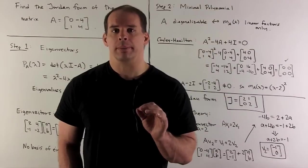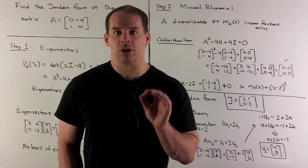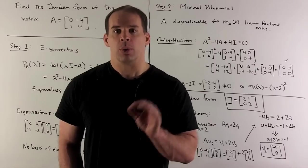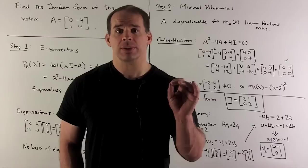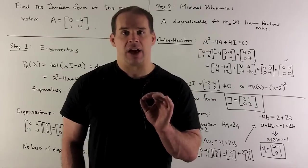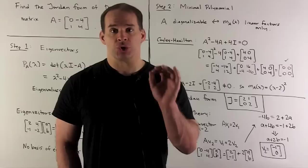So, how do we find our Jordan form? The first step is we take a look at the minimal polynomial. For each eigenvalue, we're going to assign a set of Jordan blocks. The minimal polynomial is going to tell me, for each eigenvalue, the size of the largest Jordan block.